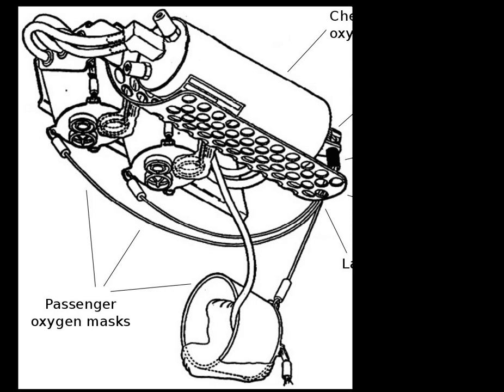In narrow-body airliners, for each row of seats there are overhead oxygen masks and oxygen generators. In some wide-body airliners, such as the DC-10 and IL-96, the canisters and oxygen masks are mounted in the top portion of the seat backs, since the ceiling is too high above the passengers.